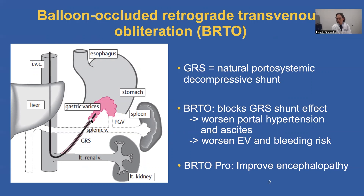They have to occlude this shunt; otherwise their obliterating agent — whether it's a sclerosant, glue, coils, gel, or various plugs — they use a large arsenal of embolizing agents, and they have to occlude this shunt to prevent systemic migration. The gastro-renal shunt is in fact a natural portal systemic decompressive shunt — in a way, it's the body's way of trying to protect the liver. When we perform BRTO, we block that gastro-renal shunt effect, which will worsen portal hypertension and either create or worsen ascites.